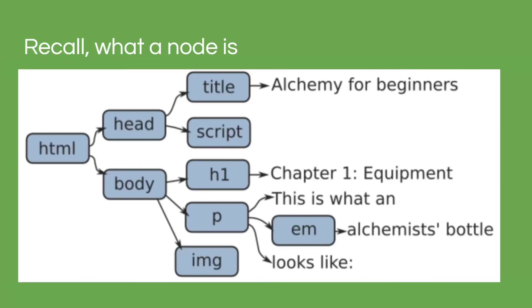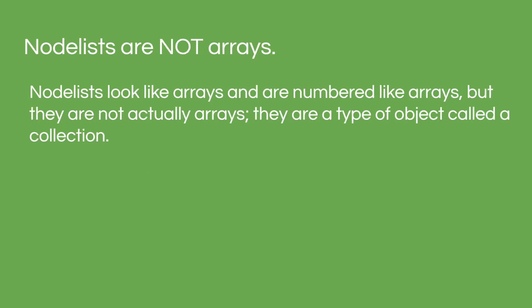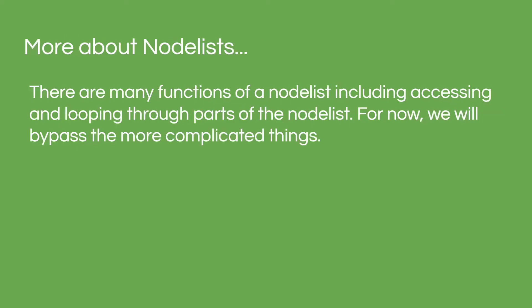Let's recall again what a node is. I found a picture online that shows the hierarchical order. HTML is the first thing; the head and the body live inside of HTML. The title, the script, h1, and other tags live inside the head and the body. A node list is just a collection of element nodes — we start counting from zero. Remember that node lists are not arrays; they look like arrays and are numbered like arrays, but they're a type of object called a collection. We can loop through the node list, but for now let's stick to the basics.